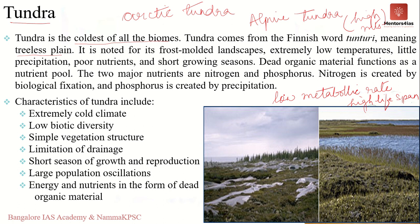There are hardly any reptiles in the tundra region because reptiles are not able to regulate their body temperature — they depend upon the external environment. When it comes to mammals, they have very large body size, small tails, and small ears to avoid the loss of heat from the surface. Characteristic features of the tundra include extreme cold temperature, low biodiversity, simple vegetation structure, limitation of drainage, short season of growth, large population oscillations, and energy and nutrients stored in dead organic material.